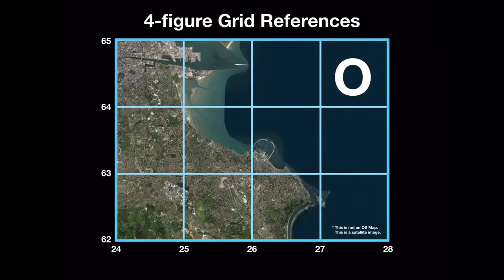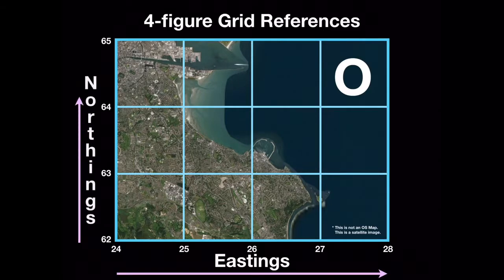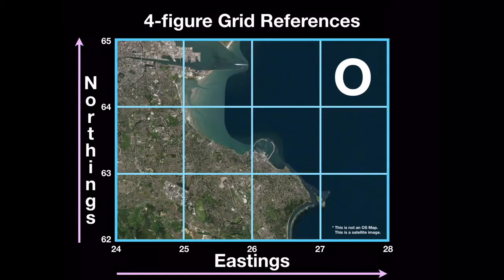The vertical lines are called eastings, and these are read from left to right, or west to east. The horizontal lines are called northings, and are read from the bottom to the top of the OS map, from south to north.